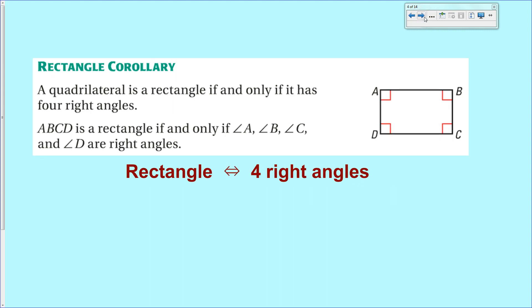Likewise, we have a rectangle corollary, which basically says if you have a quadrilateral that has four right angles, it is a rectangle. And if you have a quadrilateral that is a rectangle, then it must have four right angles.